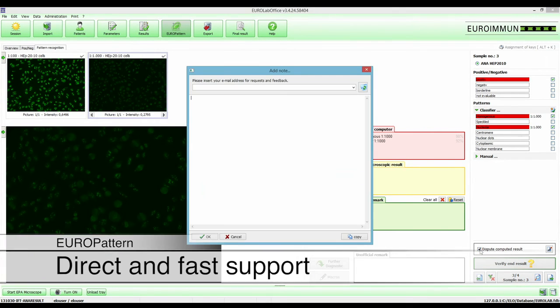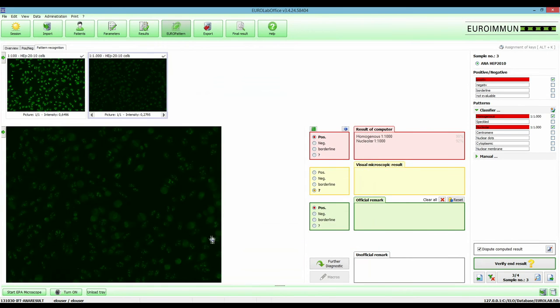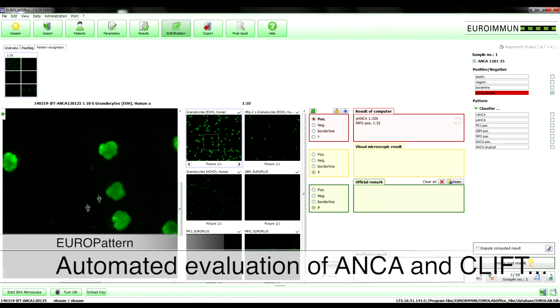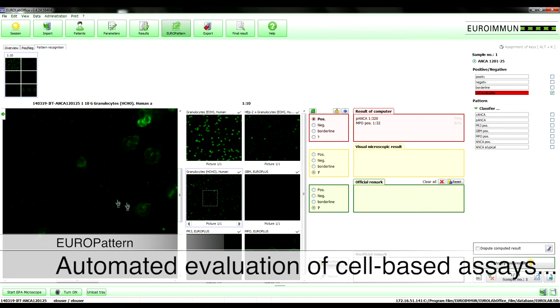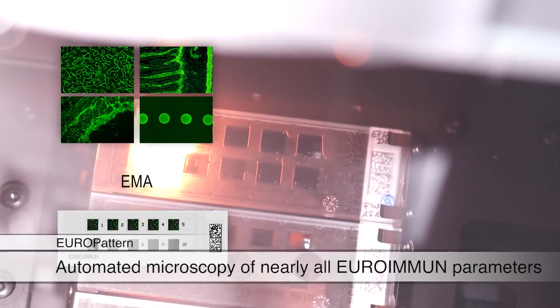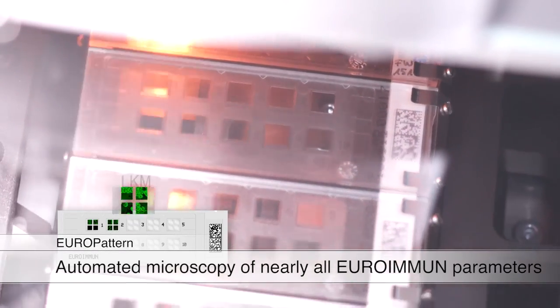In case a technical or diagnostic question comes up, the Euroimmune expert support can be requested directly per mouse click from the result overview. Automated evaluation by EuroPattern is available not only for ANA and ANKR but also for CLIFT and other analyses. Automated image capturing for subsequent on-screen diagnostics is possible for virtually all further Euroimmune parameters.